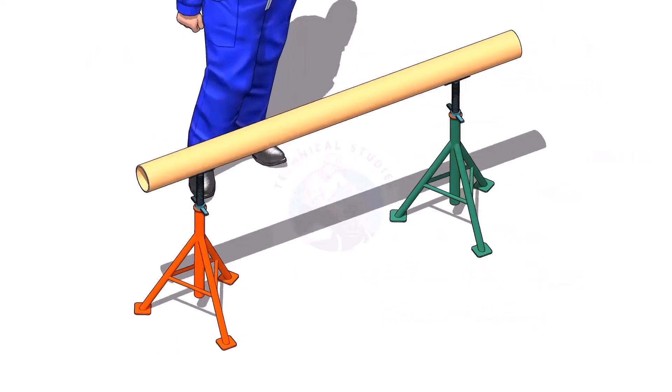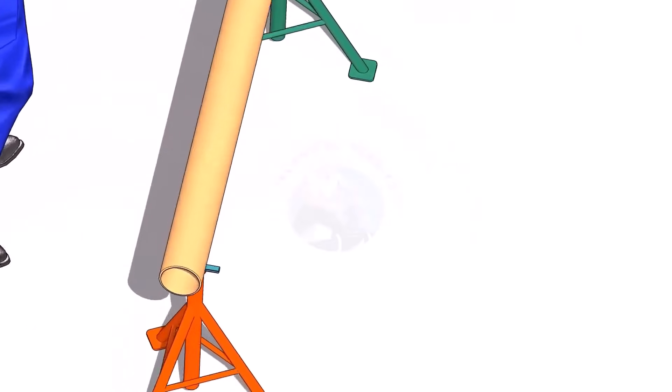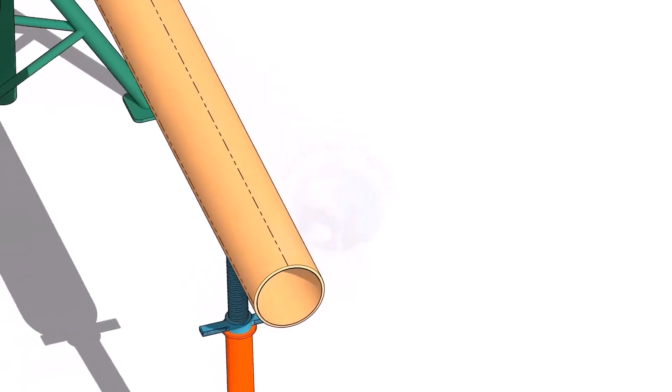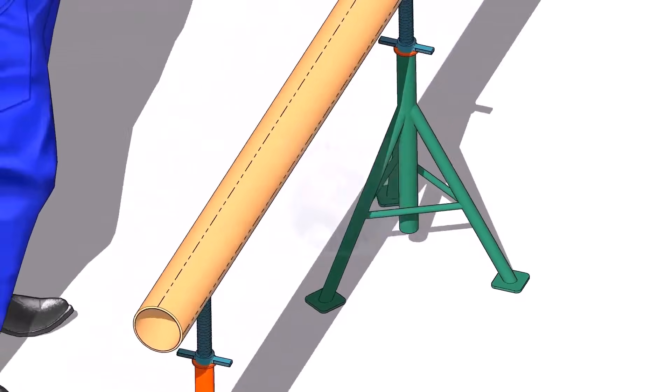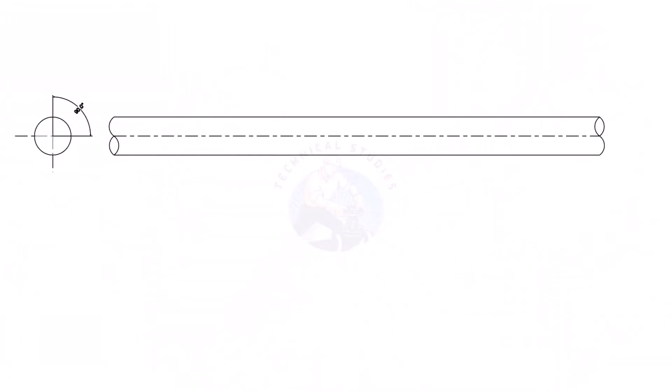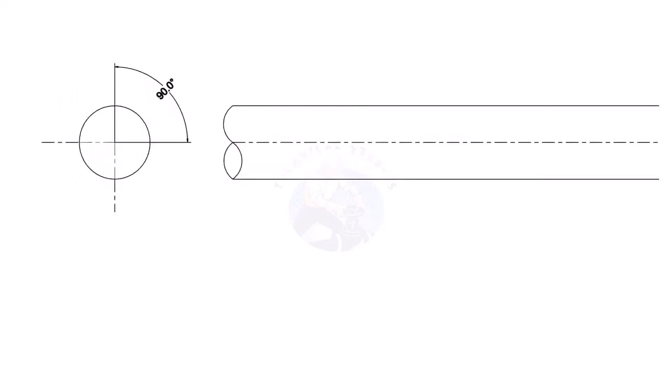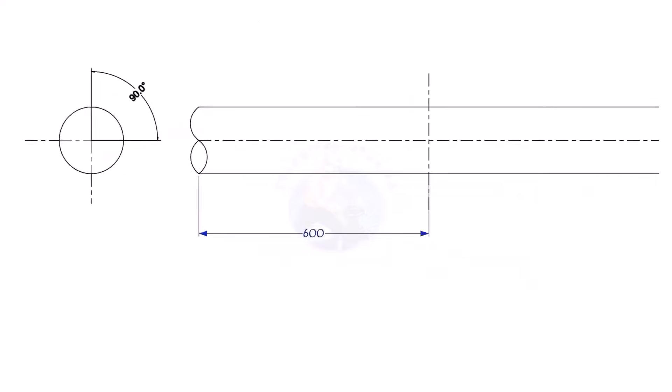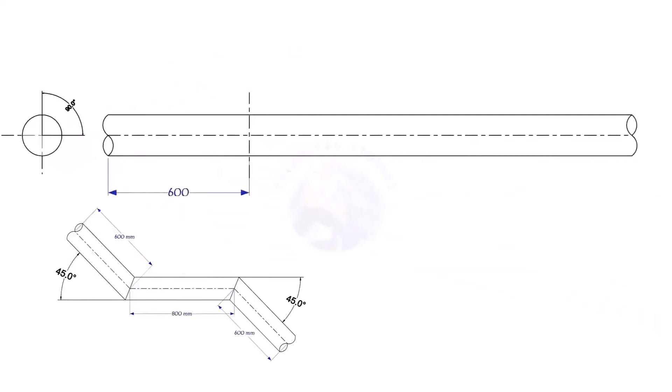Now place the pipe on stands and mark for center lines. Then mark 600mm, 800mm, and 600mm respectively, as shown.